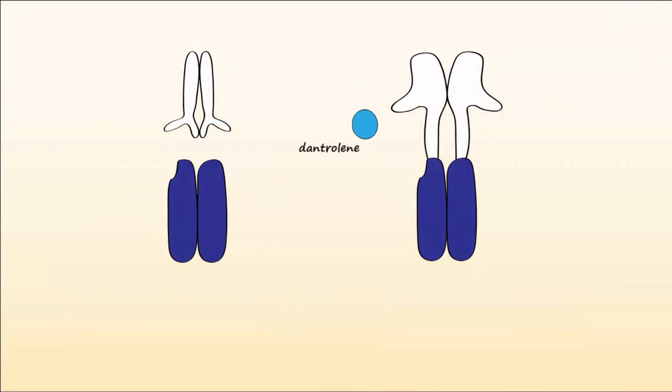Dantrolene is more selective for skeletal muscle because the heart has ryanodine type 2 receptors instead of type 1 that is in skeletal muscle.